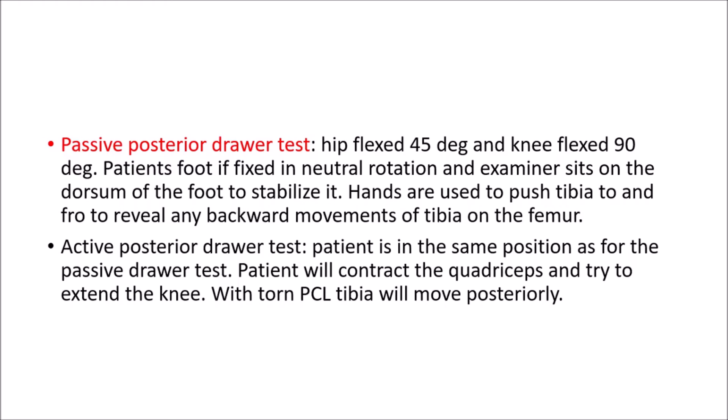Next is the passive posterior draw test. The patient is placed in the same position as the anterior draw test with the hip flexed to 45 degrees and the knee to 90 degrees. The unaffected leg is examined first to determine the normal degree of flexibility. The foot is in neutral rotation and the examiner sits on the dorsum of the foot to stabilize it; the hands are used to push the tibia posteriorly to reveal any backward movement of the tibia on the femur. The test is positive after disruption of the PCL or tear of the posterior capsular ligament.